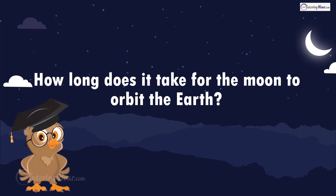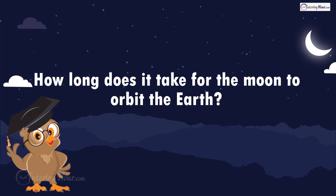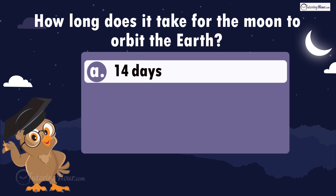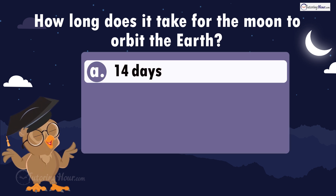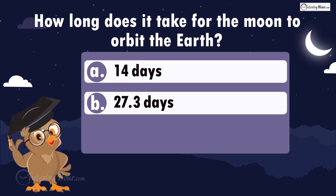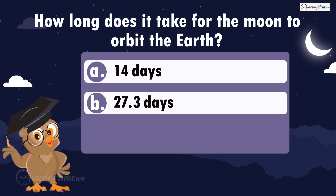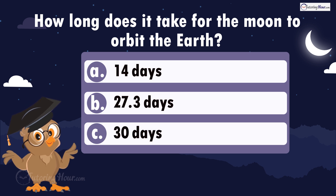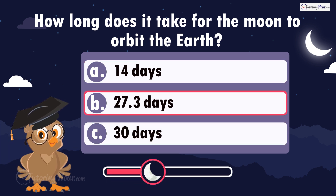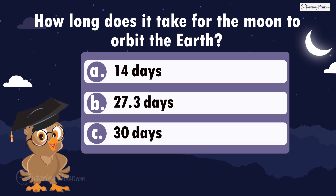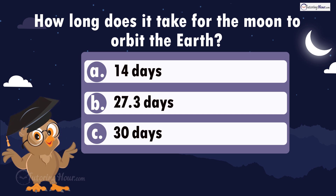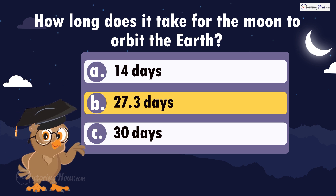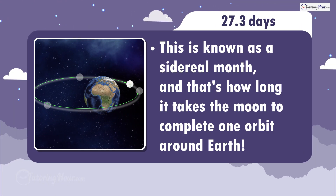How long does it take for the moon to orbit the Earth? Is it A, 14 days; B, 27.3 days; or C, 30 days? The correct answer is 27.3 days. This is known as a sidereal month, and that's how long it takes the moon to complete one orbit around Earth.